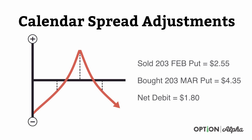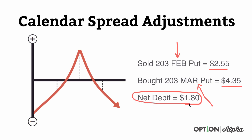We'll look to possibly adjust the front month strike we sold when it decays in value by more than 50 or 75%. Let's assume we sold the 203 February put and bought the 203 March put. The February contract is our front month, and March is our back month. We sold this contract for $2.55, the March contract is at $4.35, so the net debit or the price we paid for this calendar is $1.80. Let's assume the stock is trading at about 205. If we want the stock to move a little bit lower, the peak of our calendar is right around 203, so we'd position ourselves slightly out of the money in the direction we think the stock is going.